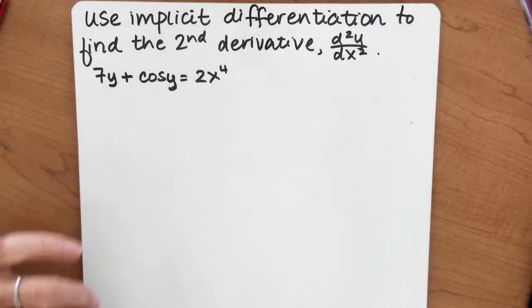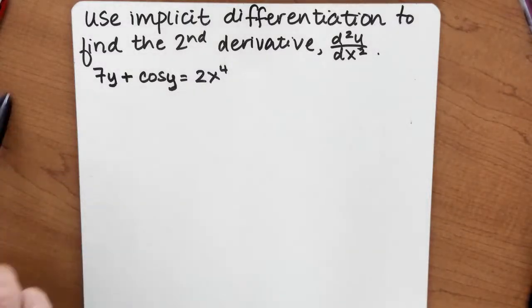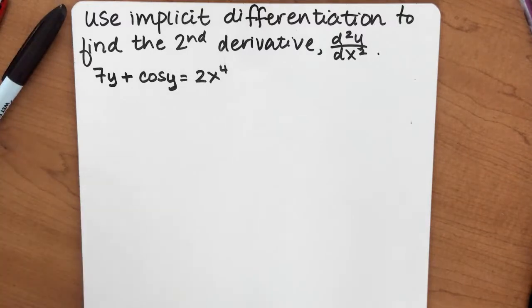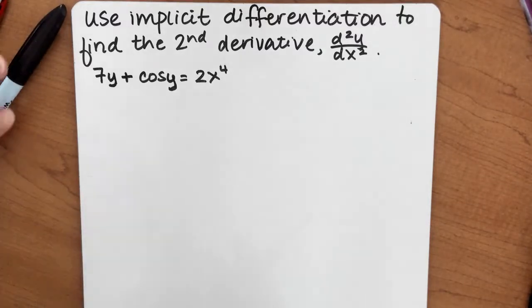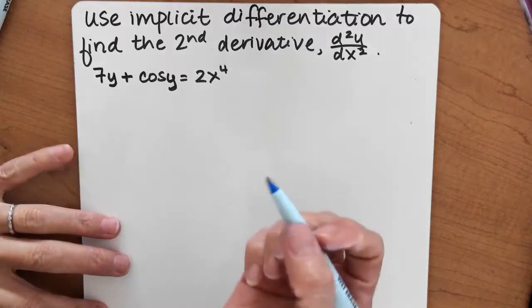I'm going to implicitly differentiate in order to find the second derivative of 7y plus cosine y equals 2x to the fourth.